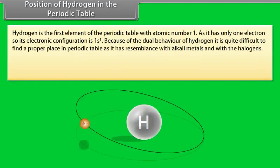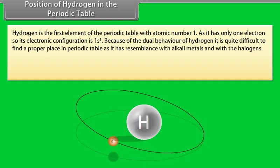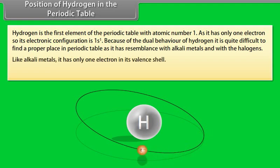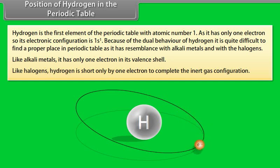Position of hydrogen in the periodic table. Hydrogen is the first element of the periodic table with atomic number 1. As it has only one electron, so its electronic configuration is 1s1. Because of the dual behavior of hydrogen, it is quite difficult to find a proper place in periodic table, as it has resemblance with alkali metals and with the halogens. Like alkali metals, it has only one electron in its valence shell. Like halogens, hydrogen is short only by one electron to complete the inert gas configuration.